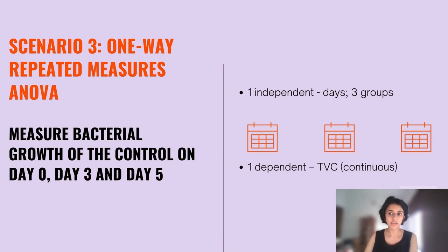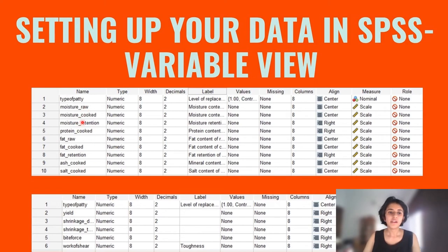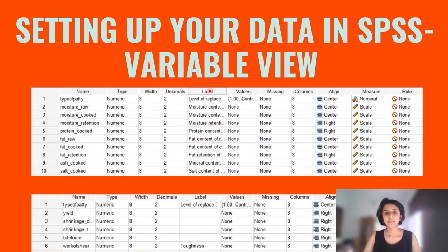Moving on to setting up your data in SPSS: you will first go to what's called the variable view, and here you'll have to set your data up depending on all the things you measured. In column one, this is what's called 'name' — just a very short description. There are certain rules: you can't put spaces, capitals are not allowed, only underscores. The type of data options are numeric or alphanumeric — most of my data was numeric. Width is the width of the column, not super important. Decimals refers to the number of decimal places. Label is a detailed description — for example, my short name was 'type_of_patty' but my detailed description was 'level of replacement'.